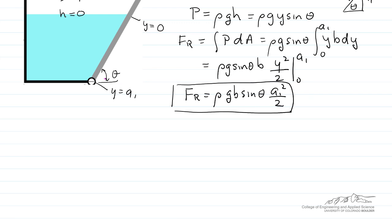Now we calculate the location of this force Fr at position yr. The force must be located so that the moment it exerts is the same as the cumulative moment of the pressures at different points. So Fr times the distance from the hinge, which is a1 minus yr.